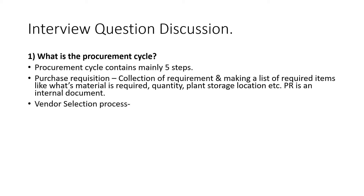After that, we do the vendor selection process. Vendor selection is optional — when purchasing material for the first time, it is completely a business call whether they want to get quotations from vendors or proceed directly to a purchase order. The standard process says we can ask for a quotation from vendors, and we maintain and compare quotations in the SAP system before finalizing.